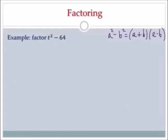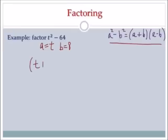Hi, it's me, Mr. B. Let's factor t squared minus 64. Again, I put the formula up here at the top of the screen. I need to figure out what a and b are. We're using the difference of two squares here. a is what I square to get t squared, which is t. b is what I square to get 64, which is 8. So now I just plug it into the formula, ending up with (a plus b)(a minus b).